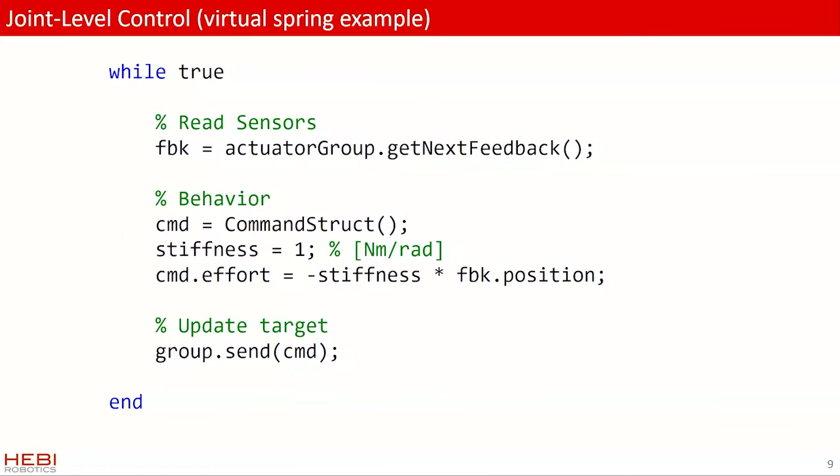So here's an API example. We have our behavior loop in the beginning. We can read the sensors, and this would be a struct with a vector of all the different actuators that are within a group. And a group can, for example, be a robot. It doesn't really matter how many degrees of freedom. It can also be a single device.